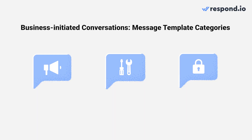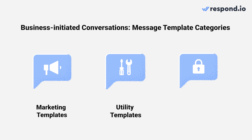Business-initiated conversations start when businesses message customers outside the 24-hour customer service window. To prevent spam, WhatsApp requires businesses to start these conversations with pre-approved message templates. There are three message template categories: one is marketing templates for any promotional messages; two is utility templates for alerts like order notifications and account updates; three is authentication templates for verification codes or one-time password notifications. Each of these template categories is priced differently by WhatsApp.